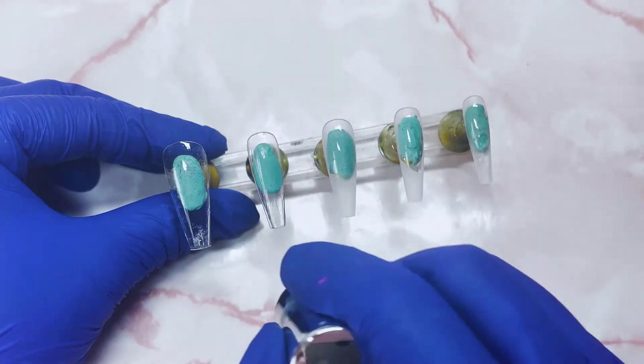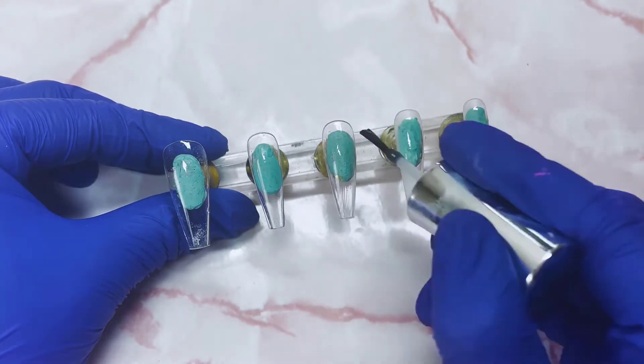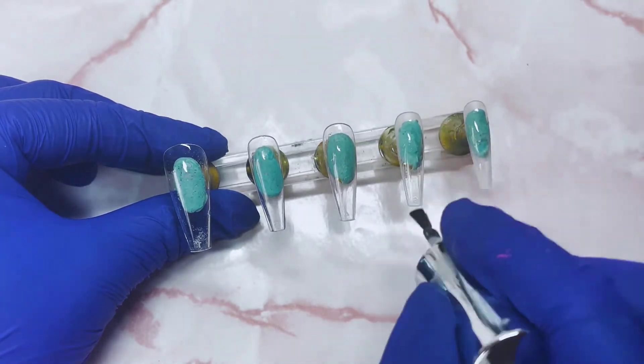As usual I've already buffed my press on nails, applied some nail cleaner and now I'm just going in with a nice thin layer of base coat across all those nails and then popping it into the lamp for about 30 seconds.